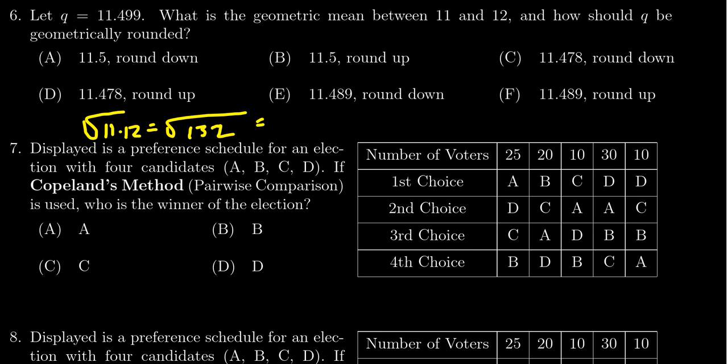This is going to give you 11.489, so the geometric mean is either option E or F. A, B, C, and D have the incorrect geometric mean, so we're not going to consider them.